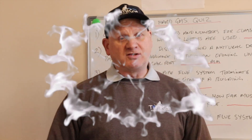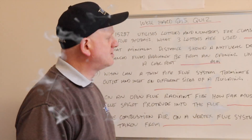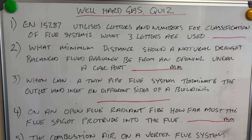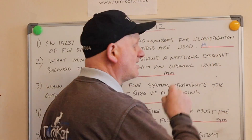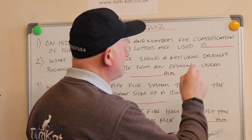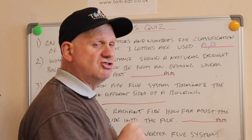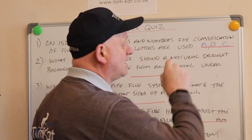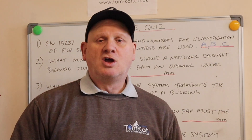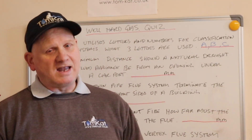Question number one: EN 15287 utilizes letters and numbers for the classification of flue systems. What three letters are used? Letter A is used for flueless appliances, letter B is used for open flued appliances, and letter C is used for room sealed appliances.